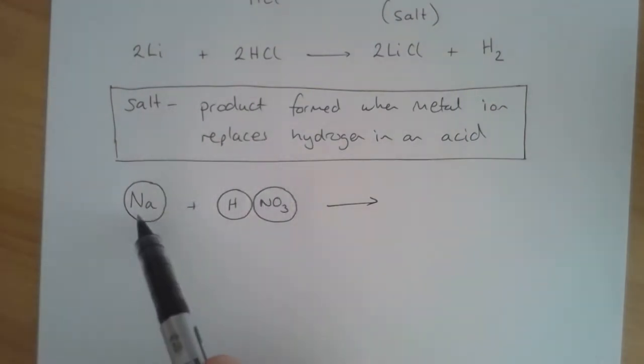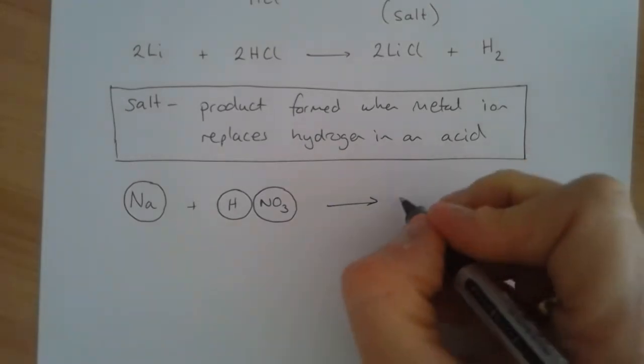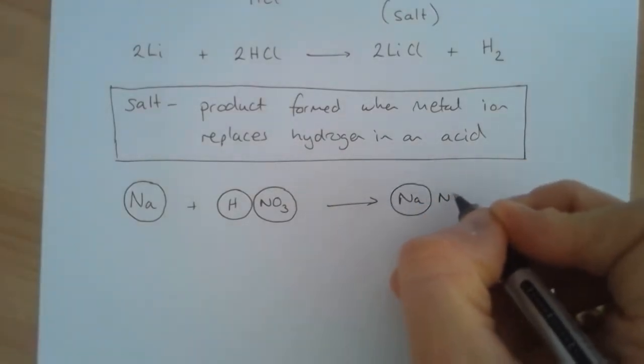We remember what the salt is: we replace the hydrogen in the acid with a metal ion, so we have sodium nitrate and hydrogen.